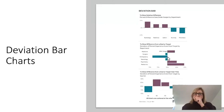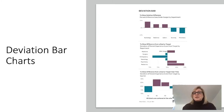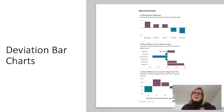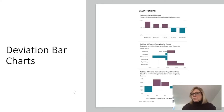So orthopedics is at about 70-something percent and needs to get to 80, while pediatrics is at 90% — clearly better than target. Deviation bar charts can also be flipped the other way and used for time cuts — showing how performance on a metric has varied over different points in time relative to a target.